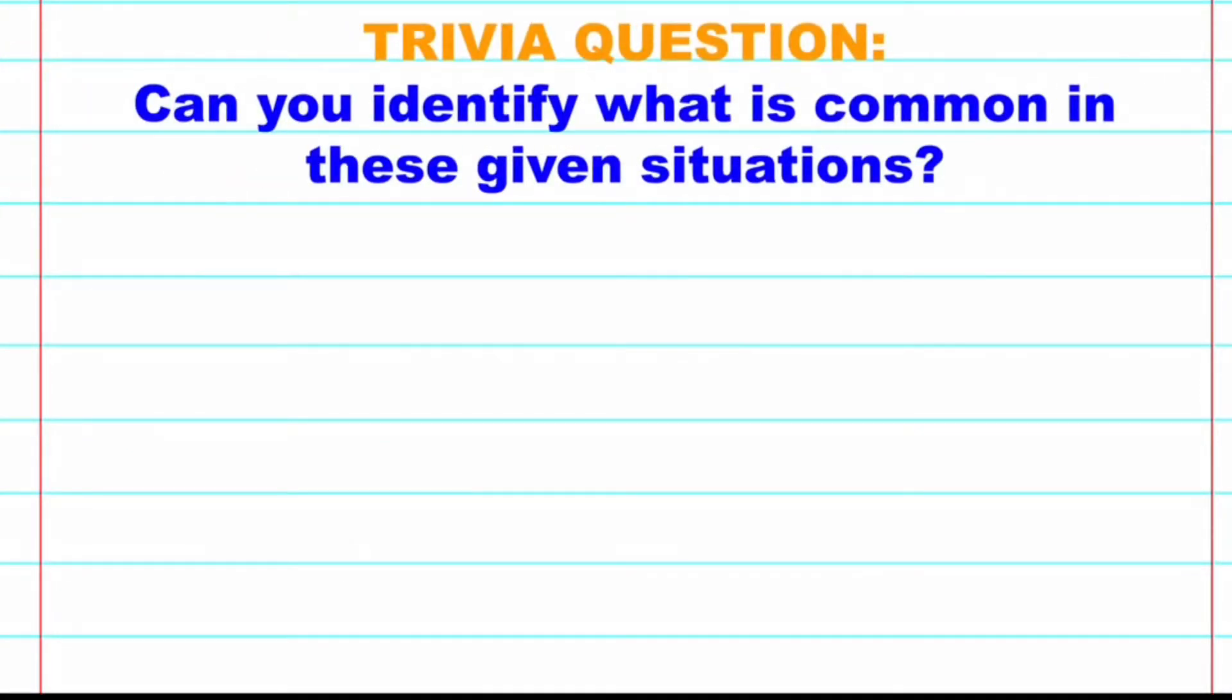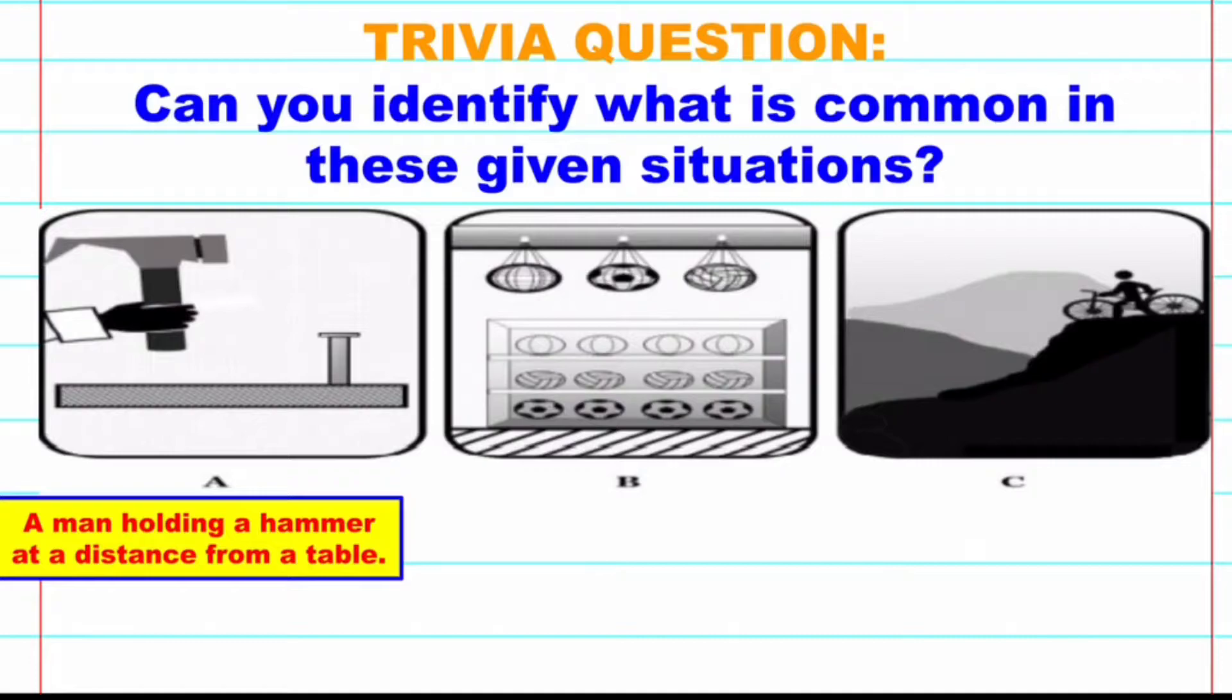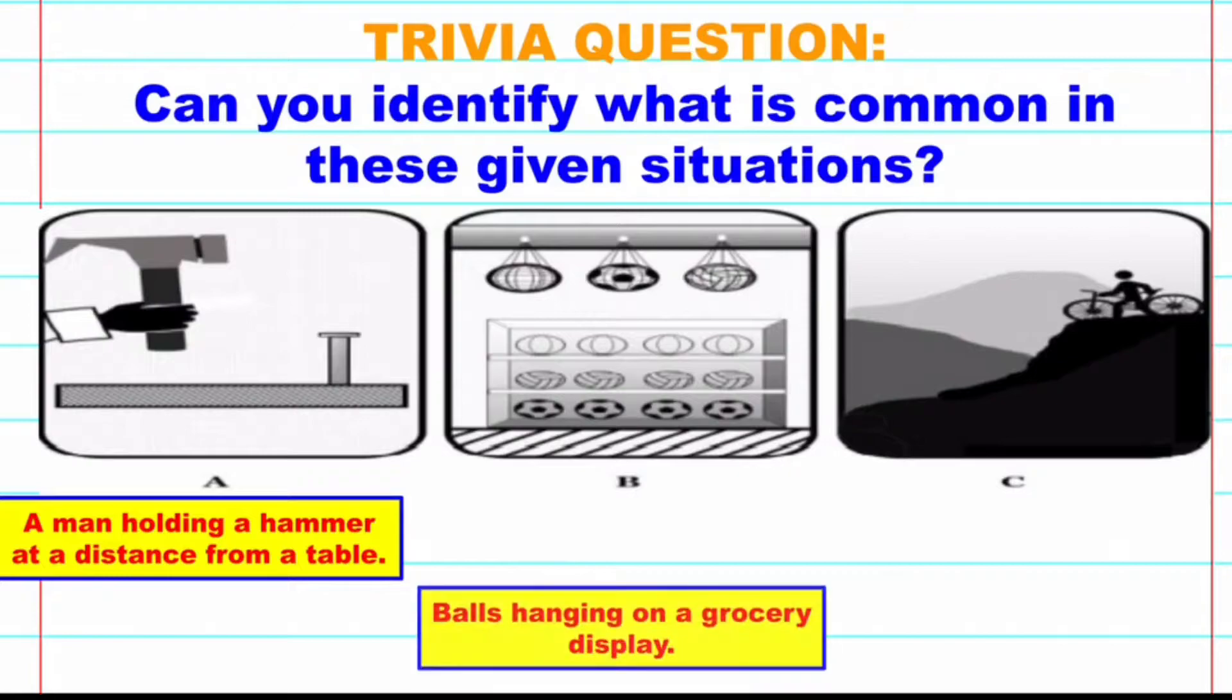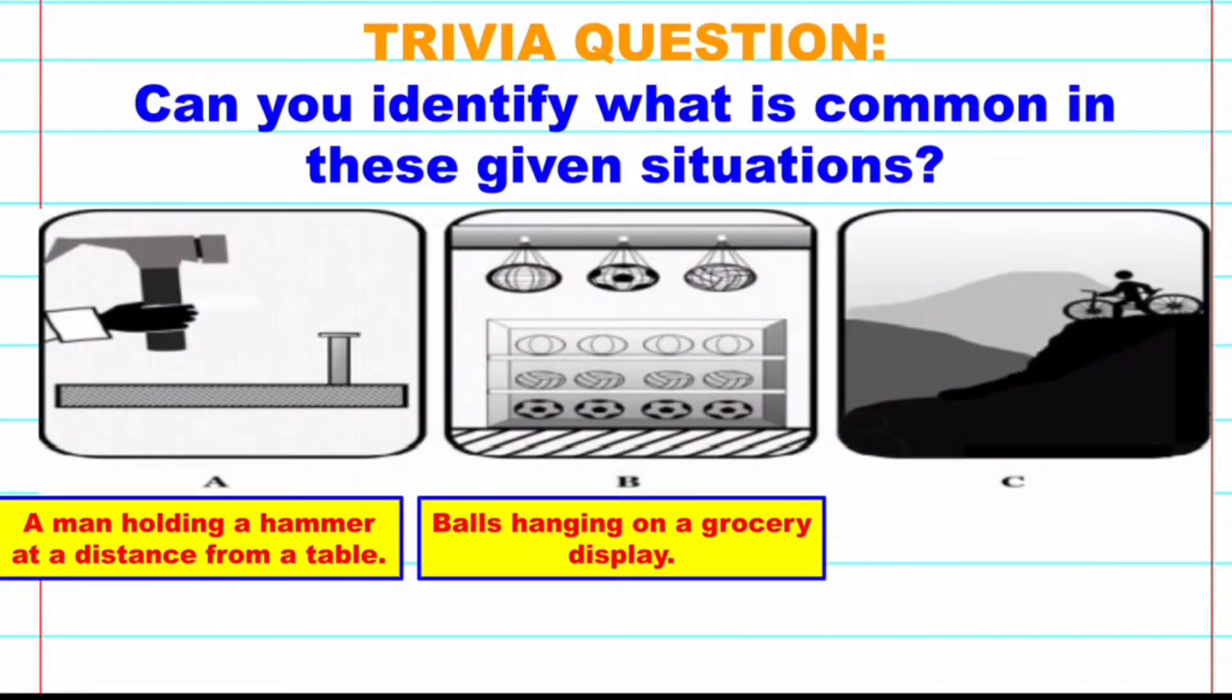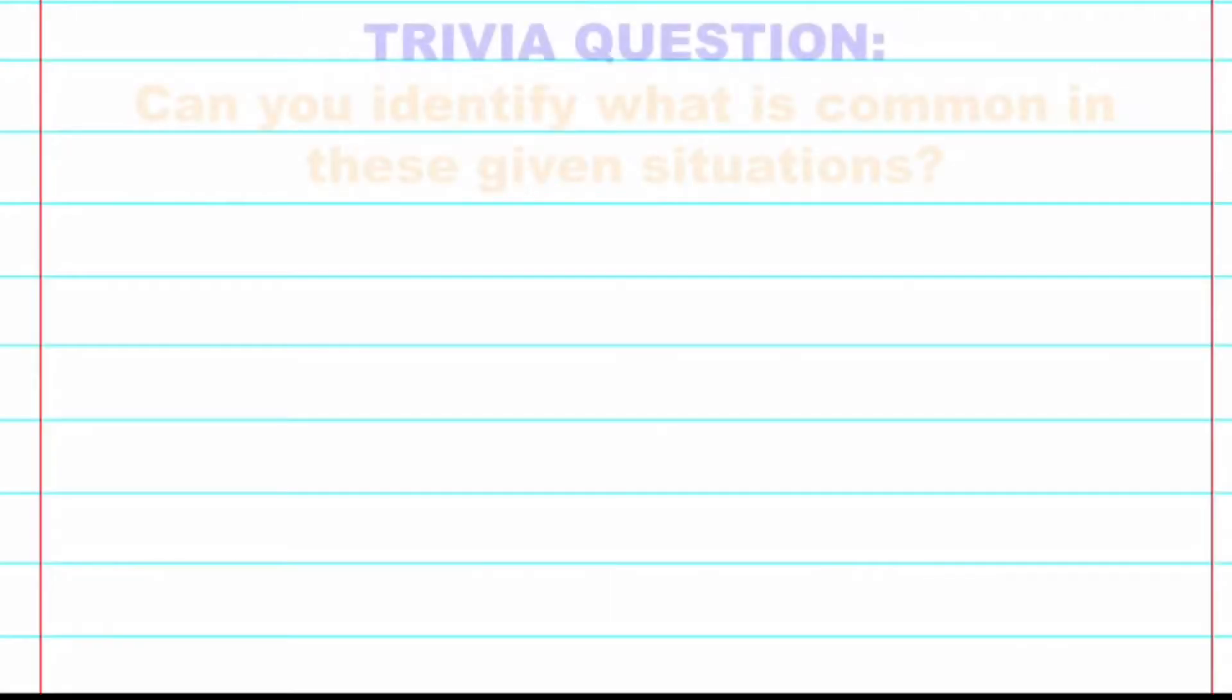Trivia question for today. Can you identify what is common in these given situations? A: A man holding a hammer at a distance from a table. B: Balls hanging on a grocery display. And C: A biker resting on top of a hill. Yes, all of them have mass, they are at rest and placed at a certain height from the reference point. Because of that, they all have potential energy.